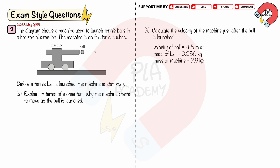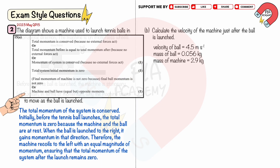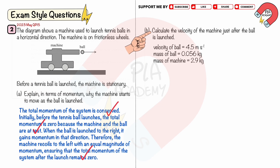Exam Style Question 2. The diagram shows a machine used to launch tennis balls in a horizontal direction. The machine is on frictionless wheels. Before a tennis ball is launched, the machine is stationary. Part A: explain in terms of momentum why the machine starts to move as the ball is launched. The total momentum of the system is conserved. Initially, before the tennis ball launches, the total momentum is zero because the machine and the ball are at rest. When the ball is launched to the right, it gains momentum in that direction. Therefore, the machine recoils to the left with an equal magnitude of momentum, ensuring the total momentum of the system after the launch remains zero. You get 3 marks: state that the total momentum of the system is conserved, that the initial momentum before the ball is launched is zero, and that the machine and ball have opposite momenta.